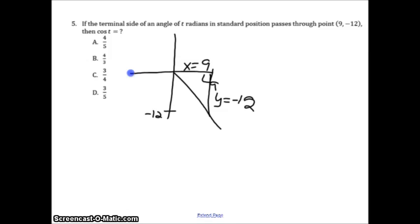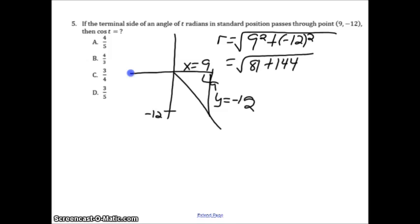I have to find r. r is equal to the square root of 9 squared plus negative 12 squared, which is equal to the square root of 81 plus 144, which is equal to the square root of 225.